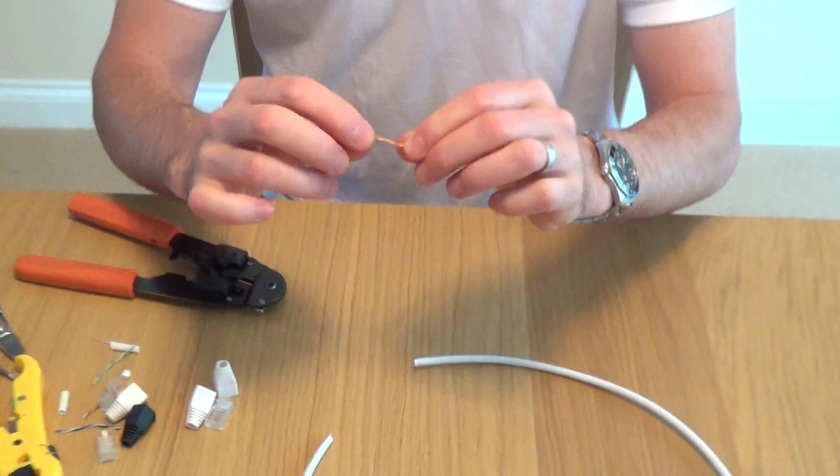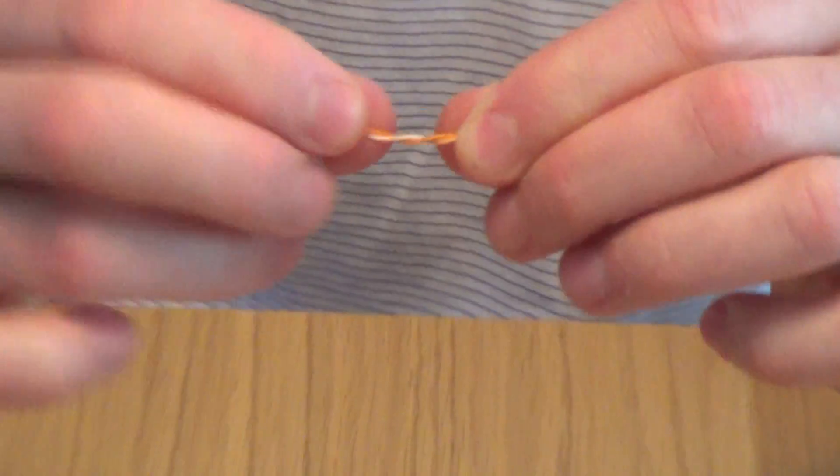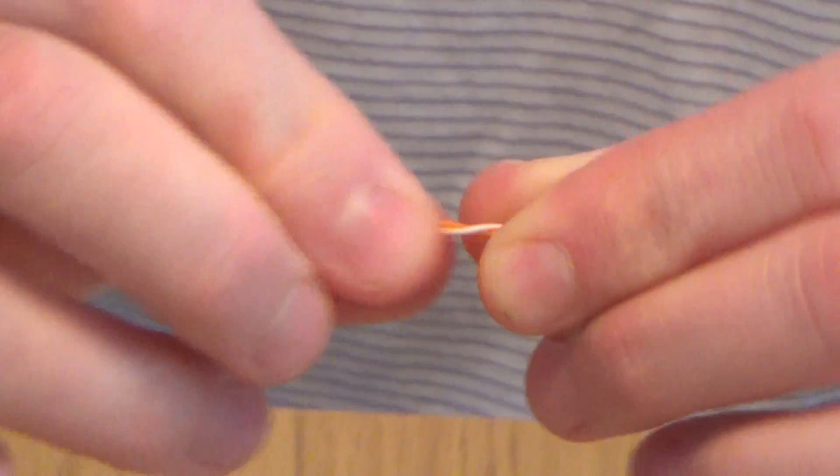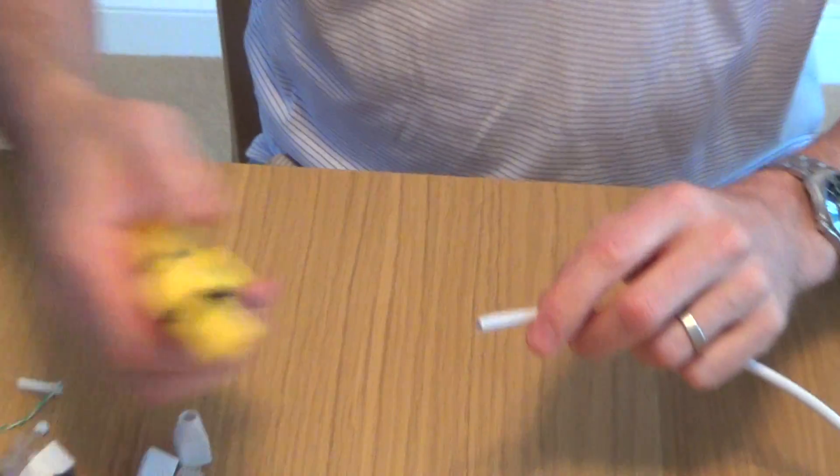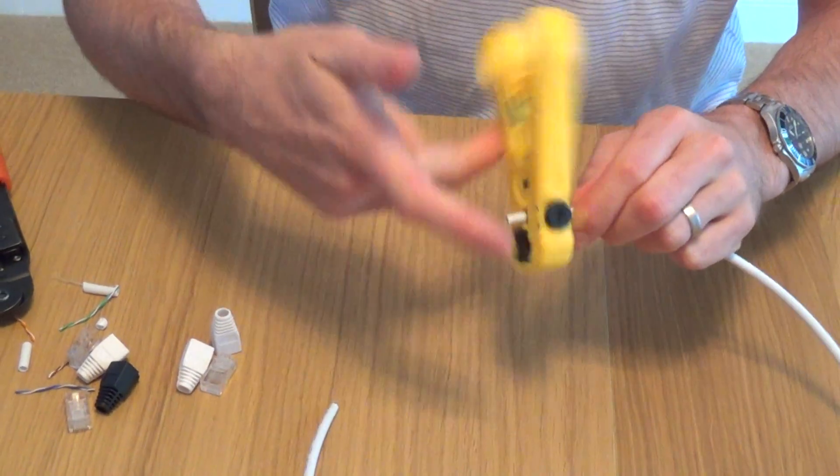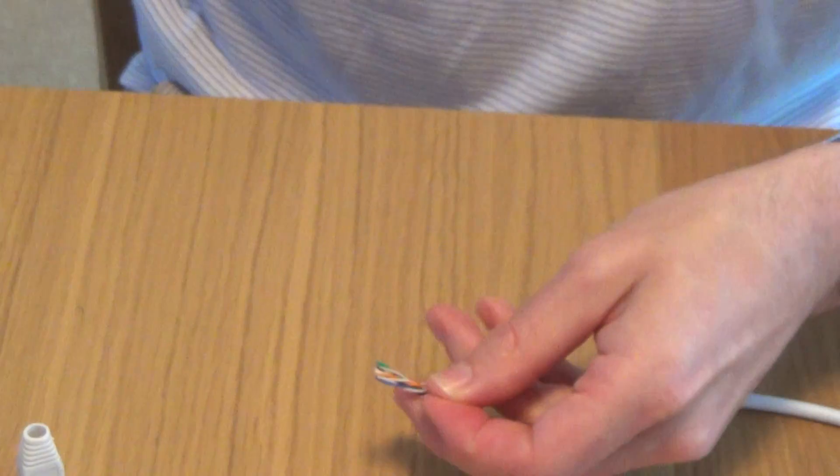Just to show you that it's solid core, so it's quite stiff, it's not like patch cable that's really floppy. So just strip that back again, there we go, get rid of the drawstring.